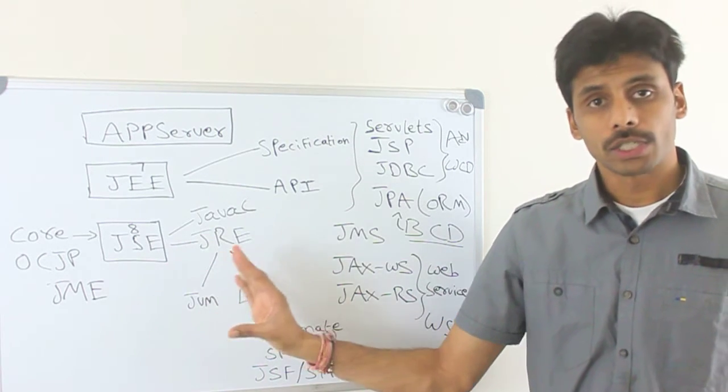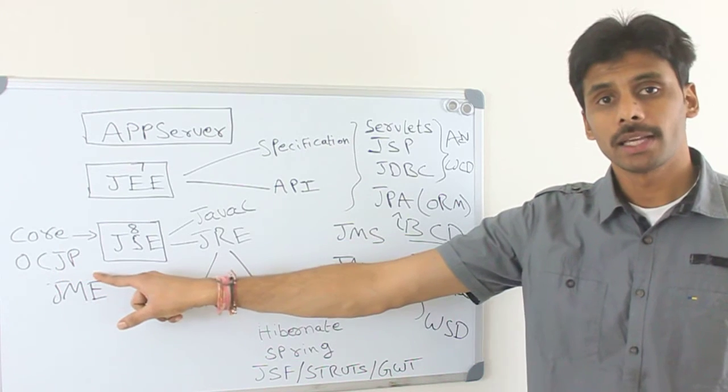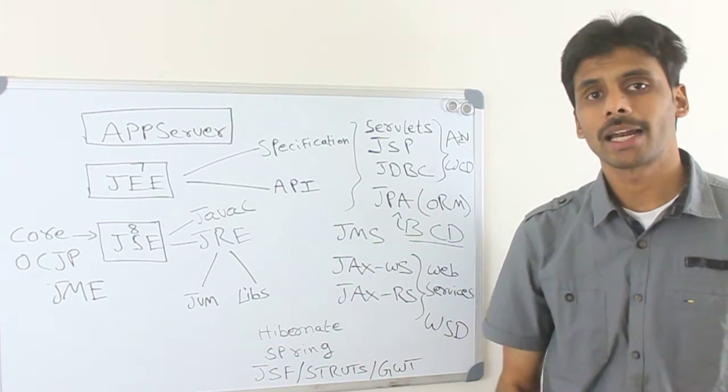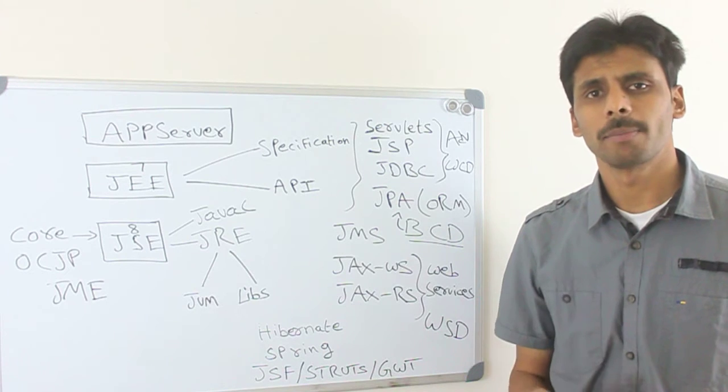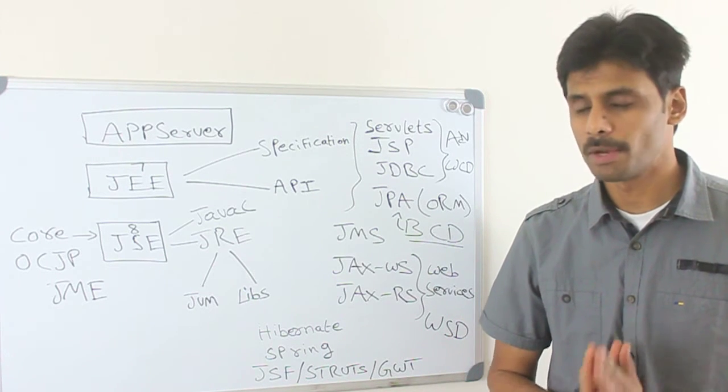While you are learning Core Java, you can do the OCJP certification. I suggest you do it parallelly as you learn Core Java. That way, all the fundamentals and basics will be solid. There will be no gaps.